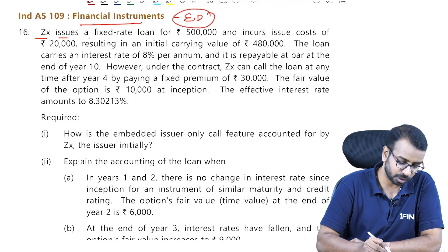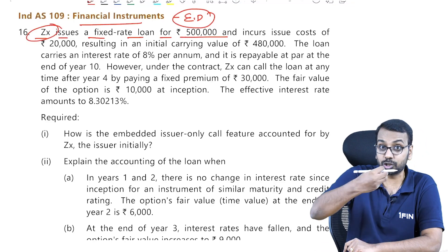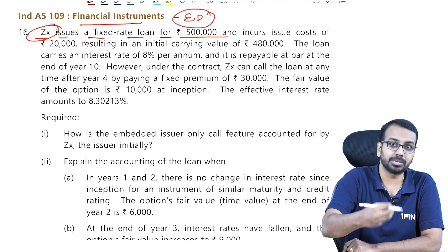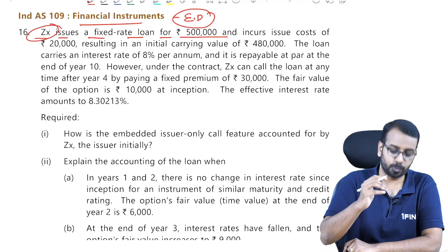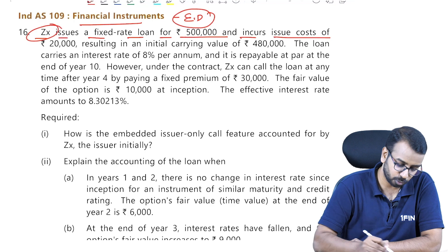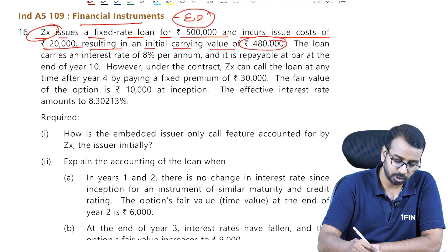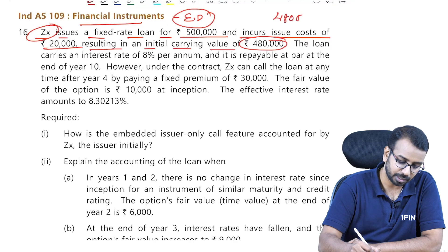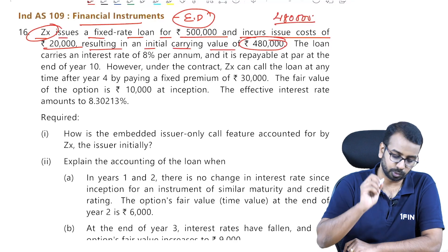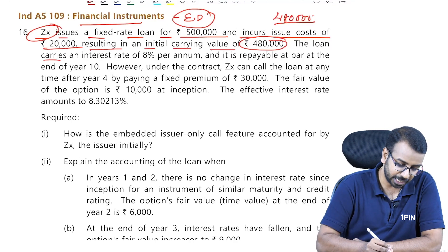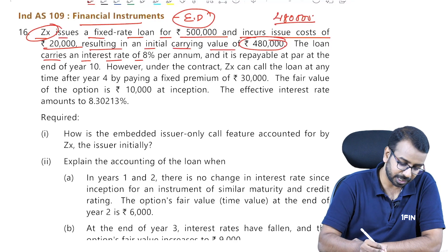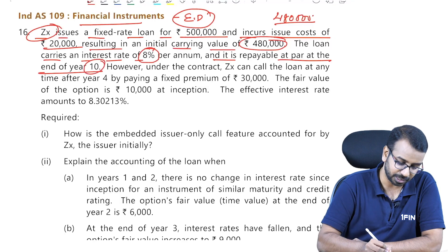ZX issues a fixed rate loan for 5 lakhs. ZX issues means ZX is borrowing. It incurs issue cost of 20,000, resulting in an initial carrying value of 480,000 — that is the net proceeds. The loan carries an interest rate of 8% per annum and is repayable at par at the end of 10 years.